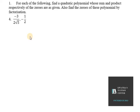Let's start with question number 1. The fourth part says we need to find a quadratic polynomial whose sum is -3/(2√5). This is the sum and the product is -1/2.